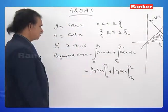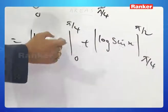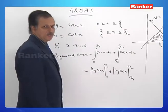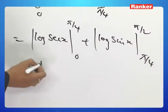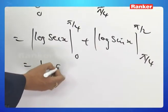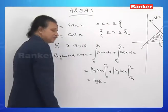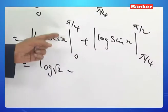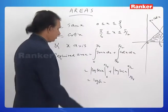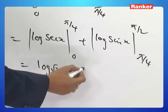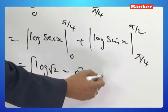Let us substitute the limits. Secant pi by 4, secant 45, what is that? root 2. So it is log root 2 minus secant 0. Secant 0 is 1, log 1 is 0. So the first part is log root 2 minus 0.